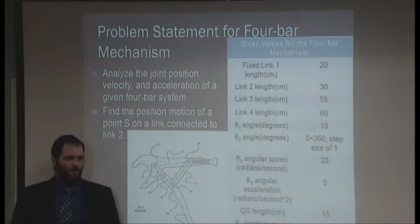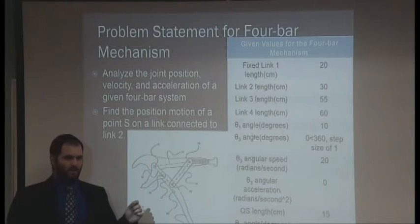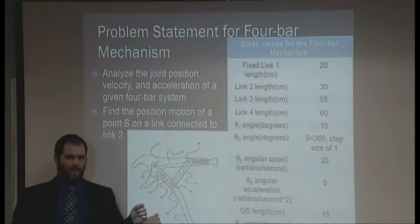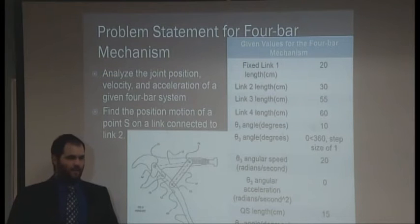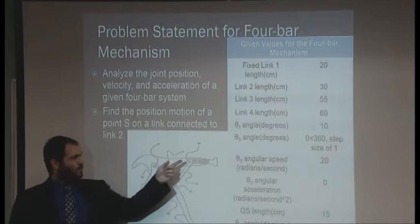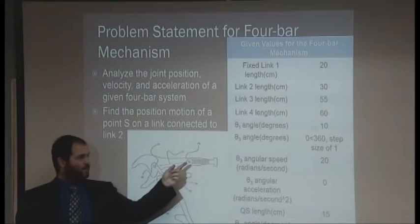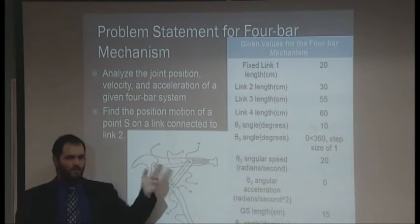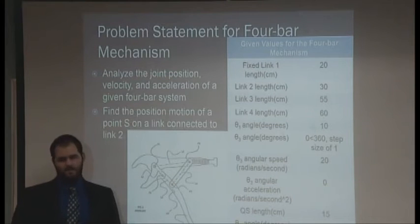The problem statement of the four-bar mechanism consisted of analyzing the joint positions, velocity and acceleration, as well as the point S, which is located on the coupler link at point Q. These are the constants given to us, and these constants with the angle theta 3 will be run from 0 to 360 at a time step of 1 degree to map out the motion.